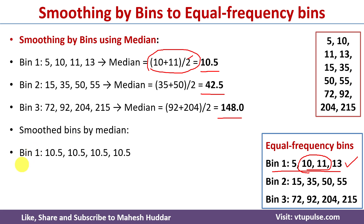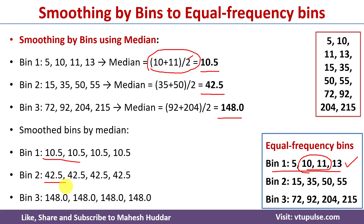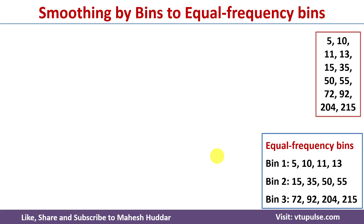We replace all data points with the median values to get the smoothed bins by median. For the first bin all values are replaced with 10.5, for the second bin 42.5, and for the third bin 148. Now we will go for the boundaries calculation.